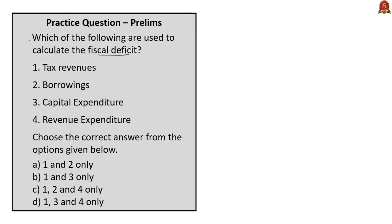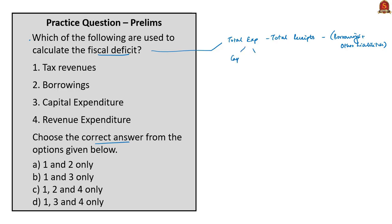Which of the following are used to calculate the fiscal deficit? The options are tax revenues, borrowings, capital expenditure, and revenue expenditure. The fiscal deficit is the total expenditure minus total receipts except debt capital receipts. Debt capital receipts consist of borrowings and other liabilities, which are not taken into account while calculating the fiscal deficit. Total expenditure refers to both capital and revenue expenditure. So eliminating borrowings, the correct answer is option D: 1, 3, and 4.